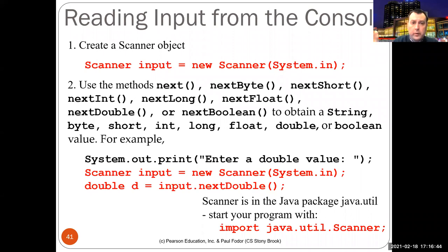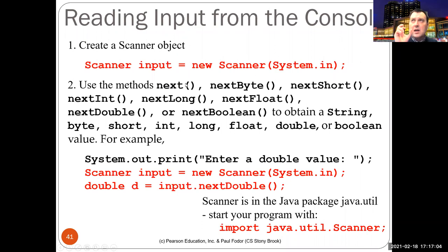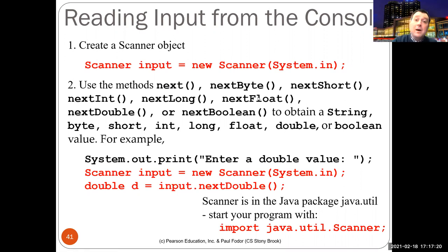Scanner is in the java.util package and is used for reading data from the command prompt. Its methods include next() for a string up to the first whitespace, nextByte(), nextShort(), nextInt(), nextLong(), nextFloat(), nextDouble(), and nextBoolean() — one for each primitive type.